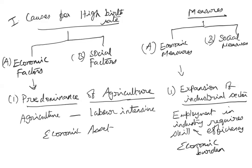This connects to the earlier topic of structural changes in the country — why the country has to shift from the agricultural sector to industry and further to the tertiary sector. As long as the country depends on agriculture, families don't realize the problem of overpopulation. Once the country shifts to the industrial sector, people themselves will try to restrict the size of their family.